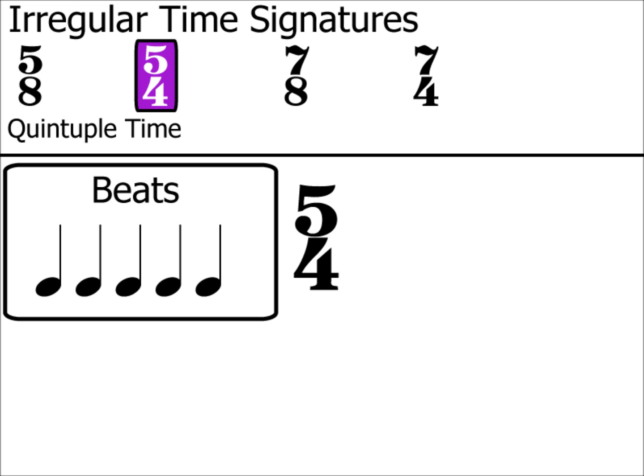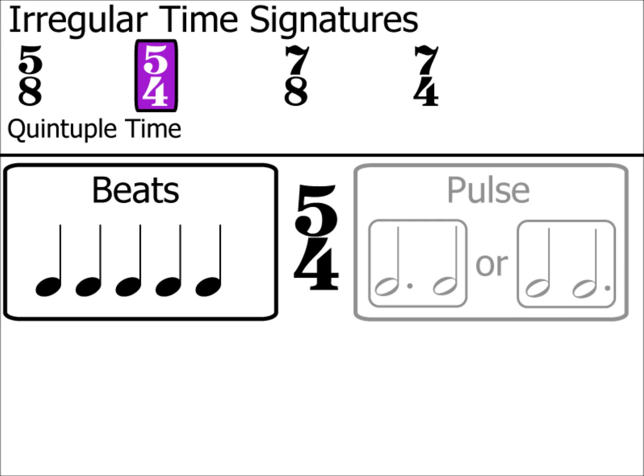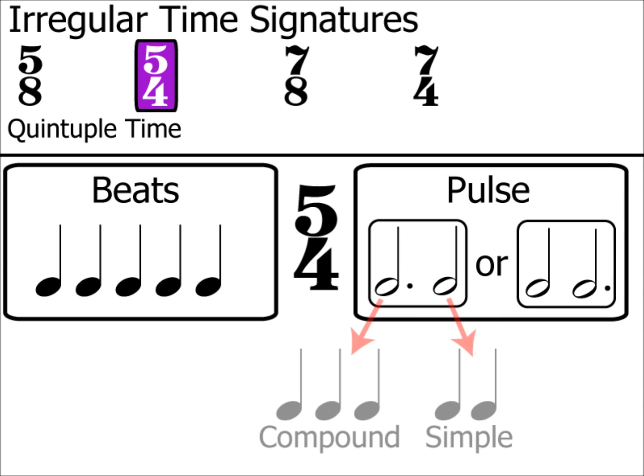Like 5/8, there are two pulses in 5/4, either a minim and a dotted minim per bar, or vice versa. As the pulse does not split neatly into equal groups of two or three, it cannot be simple or compound, thus making it an irregular time signature.